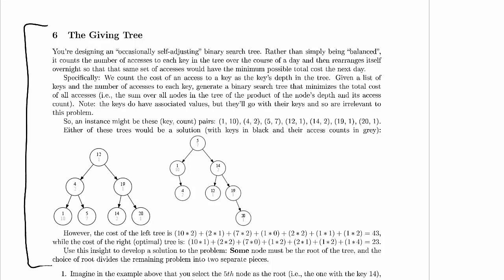Specifically, we count the cost of an access to a key as the key's depth in the tree, so one access to a particular key costs as much as its depth. So the top key in the tree, the root, is at depth zero, so that's going to cost nothing, whereas this would cost one, and this would cost two.